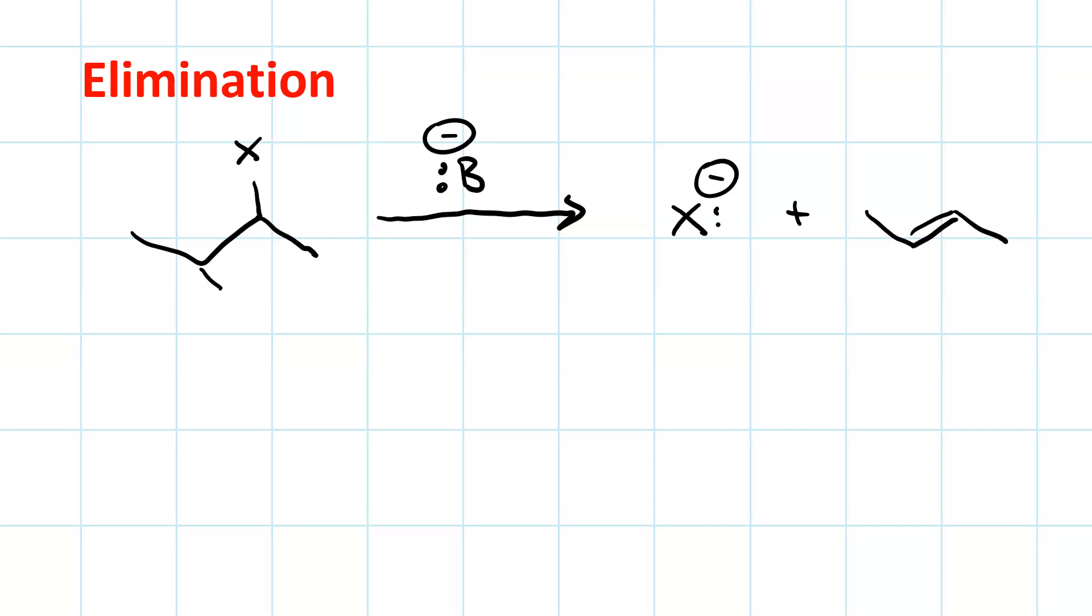What we're really eliminating is one of these beta protons and the leaving group. That means both of our alpha carbon and our beta carbon only have three bonds. To give them a fourth, we put in that pi bond. It's actually the pair of electrons that bind the beta proton that becomes the pi bond.